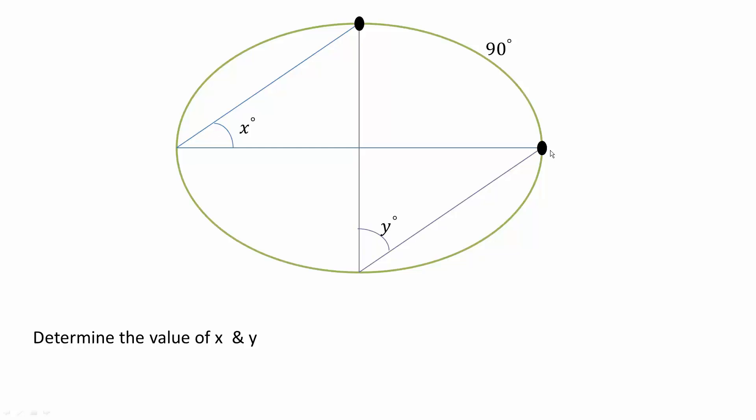y is also an inscribed angle. So we know that x and y will be the same. Further, because x and y are inscribed angles, they will be half of 90 degrees. So half of 90 is 45 degrees, meaning x and y are both 45 degrees.